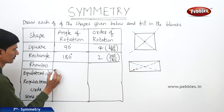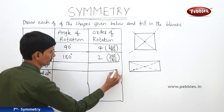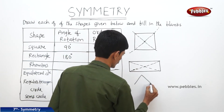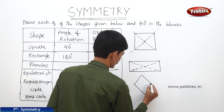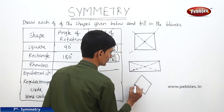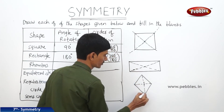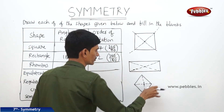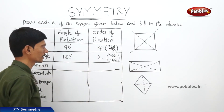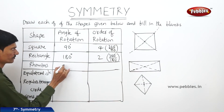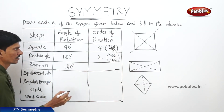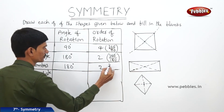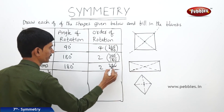Now in case of a rhombus, the center is the point of intersection of the two diagonals. If you rotate the rhombus through 180 degrees, then we will get back its original position. So the angle of rotation is 180 degrees. Then the order of rotation is 2, because 360 degrees divided by 180 degrees is 2.